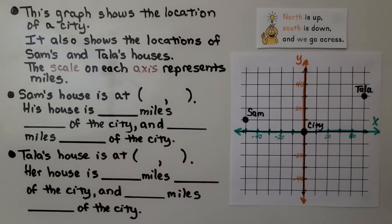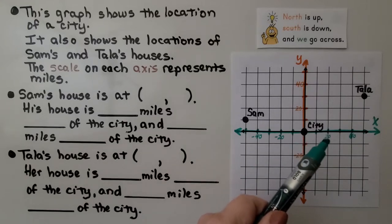This graph shows the location of a city, and it also shows the location of Sam's house and Tala's house. The scale on each axis represents miles. So, we have 10 miles, 20 miles, 30 miles, 40 miles, and so on.